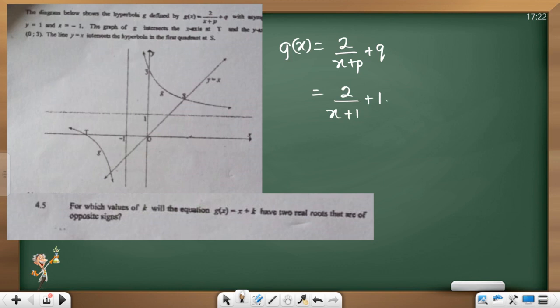Now we have another straight line. It says the line y equals x intercepts the hyperbola in the first quadrant at s. Okay, we have that point and that point. That's not the focus.